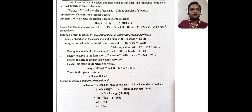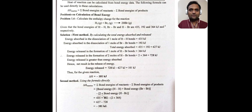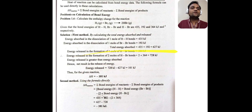Since energy released is greater, the net result is a release of energy. Energy released equals 728 kJ minus 627 kJ, which is 101 kJ. Therefore, delta H for the given reaction is minus 101 kJ. The negative sign is there because energy is released.